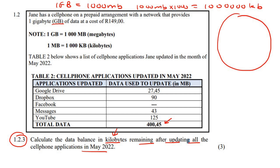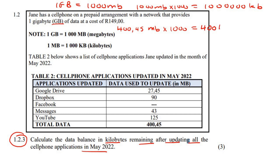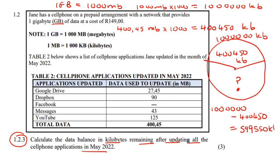So we have one million kilobytes. Now, the data used is 400.45 megabytes. To change that to kilobytes, remember you multiply by a thousand, and that becomes 400,450 kilobytes. So thinking about it like a big circle: at the beginning of the month she receives one million kilobytes, and she uses 400,450 kilobytes to update all of her apps. So we work out the leftover: one million take away 400,450 gives us 599,550 kilobytes.